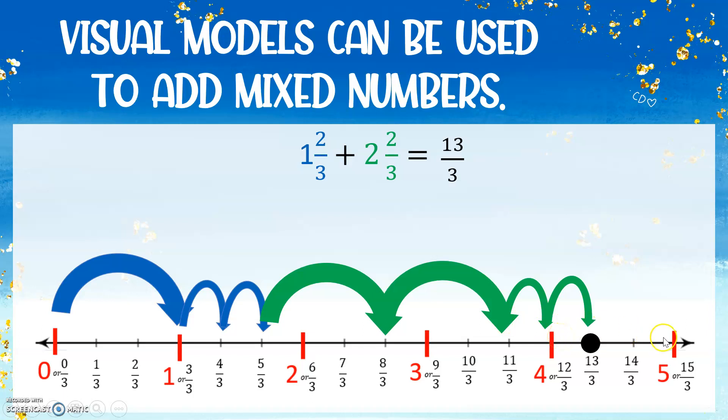We're not all the way at 5 wholes yet. So we're at 4 wholes. So it would be 4 and 1 third because it takes one more jump to get from 4 to 13 thirds. Either way that you do it is fine. 13 thirds or 4 and 1 third.